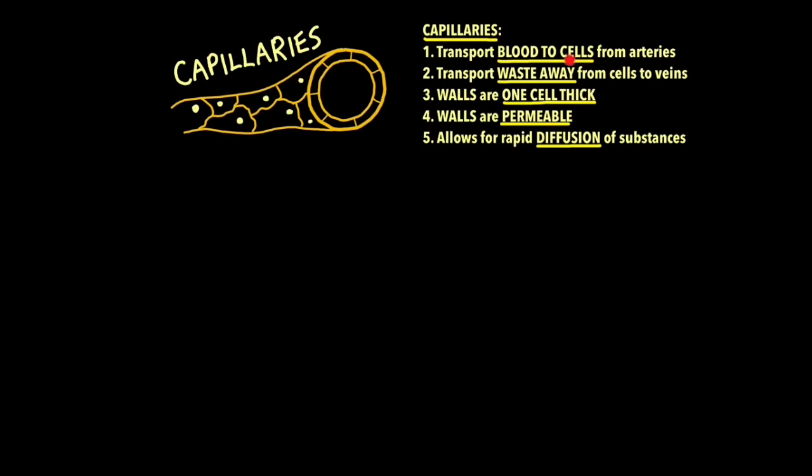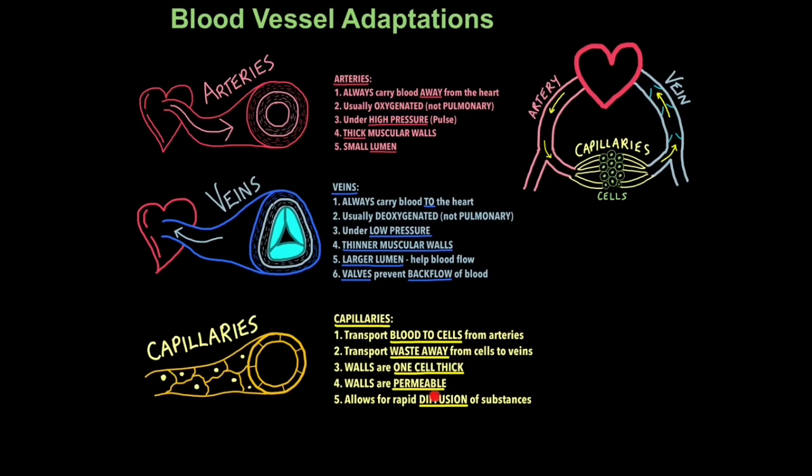Capillaries are only one cell thick. They're tiny. They transport blood to cells from arteries and transport waste away from cells to veins. They are very thin. They are only one cell thick, the walls. And the walls are permeable. They can actually open slightly and close to allow things through. This allows for rapid diffusion of important substances. Whether it's useful materials or waste materials. So once again this could be a six marker quite easily. So just make sure you know how these blood vessels are adapted for transporting blood and how they are different from each other.